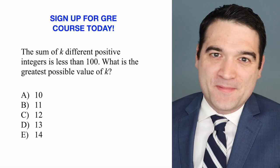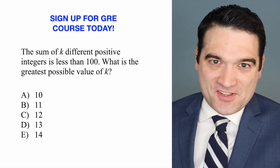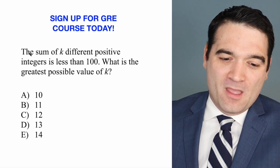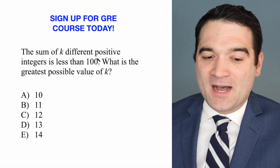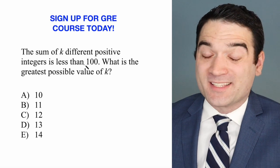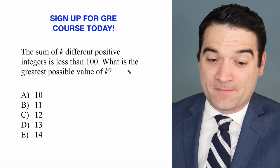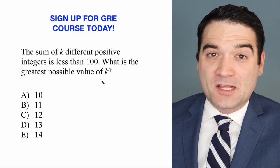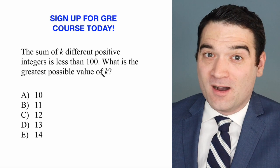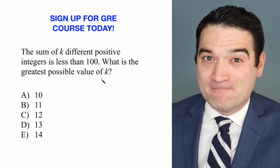Here's a GRE arithmetic question. Let's take a look. The sum of k different positive integers is less than 100. What is the greatest possible value of k?